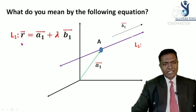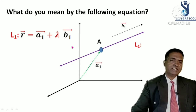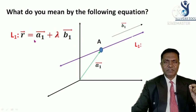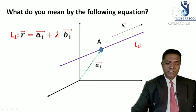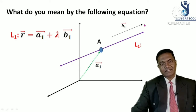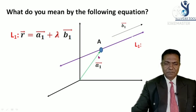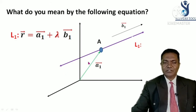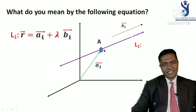If you find an equation like this in vector form, it represents the equation of a line which passes through a point whose position vector is A1 and is parallel to some vector B1. This stands for the position vector of one point that lies on line L1, and this stands for the direction of line L1.